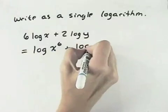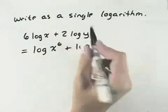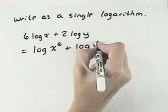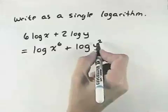And the same thing here with the log of y. Instead of the 2 in front, that's the same as pulling this 2 up and making it log of the quantity y squared.